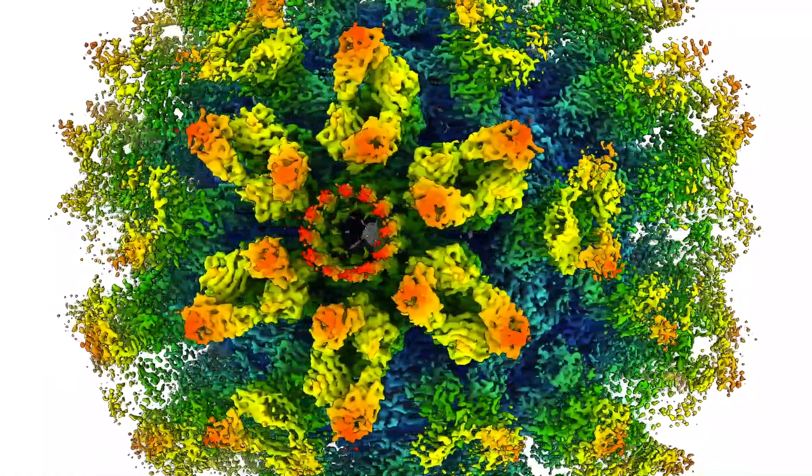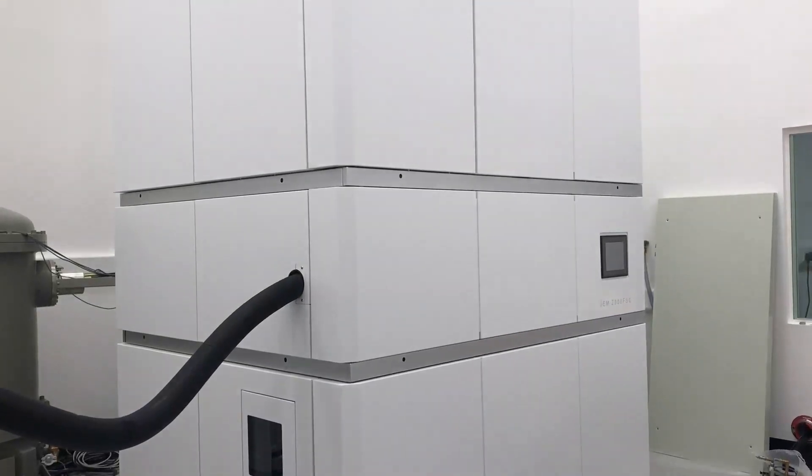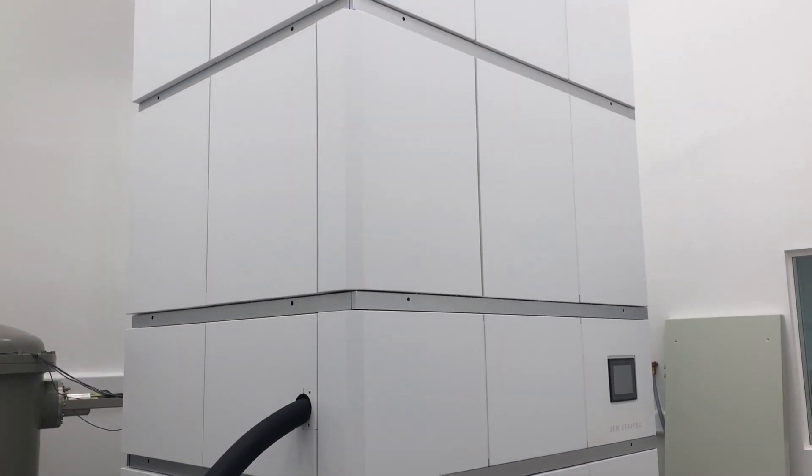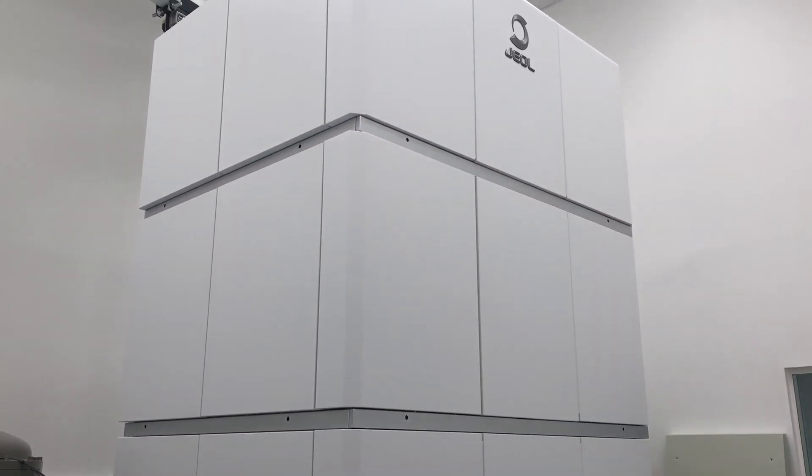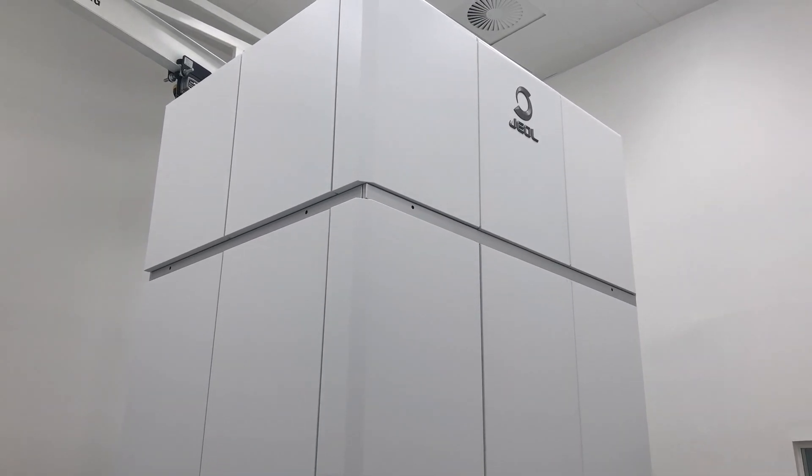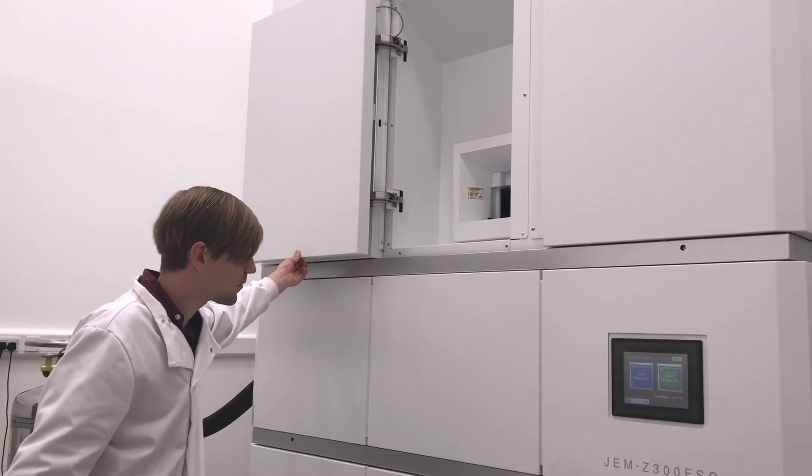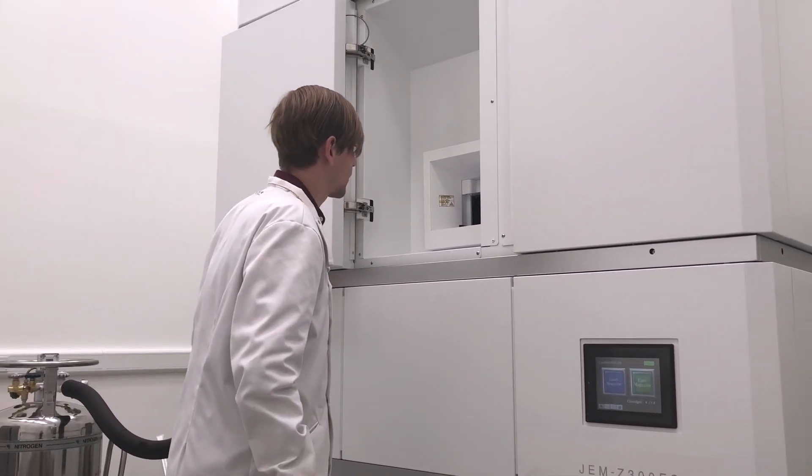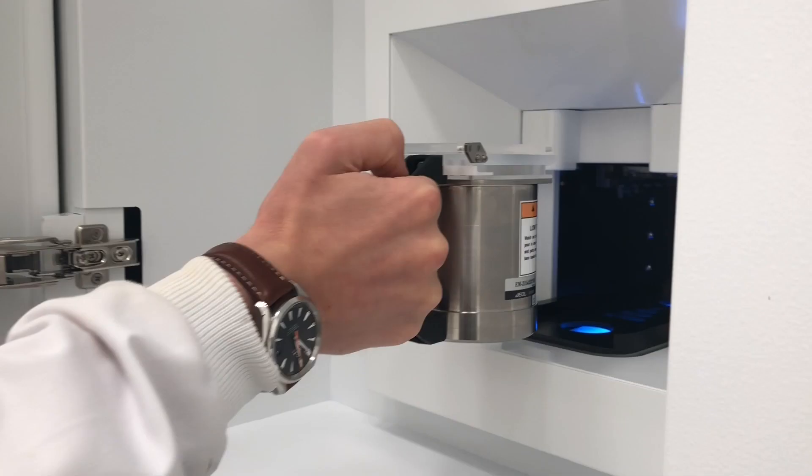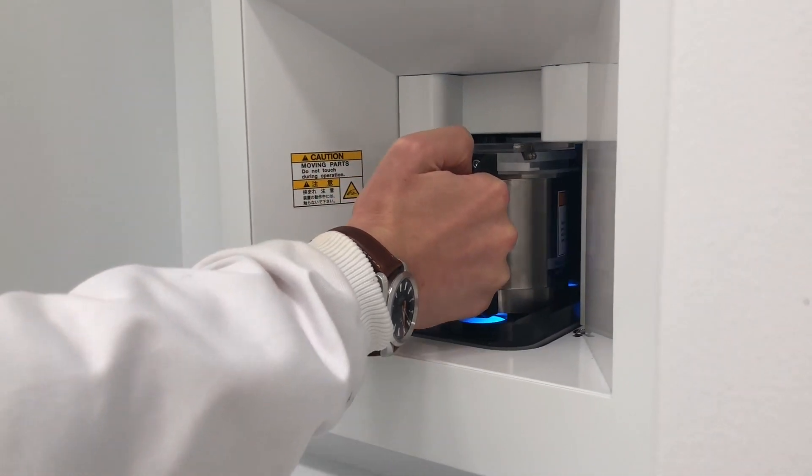Structural biology research at the University of Glasgow has access to world-class cryo-EM facilities through the Scottish Centre for Macromolecular Imaging, or SCMI, which is co-located with the CVR at the Sir Michael Stoker building on the Garscube campus.